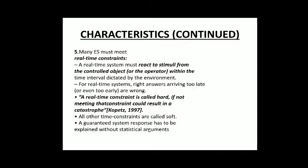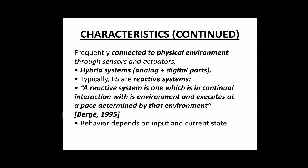For a real-time system, a right answer arriving too late or too early is considered wrong. A real-time constraint is called hard if not meeting that constraint could result in a catastrophe. All other time constraints are called soft. A guaranteed system response must be established without statistical arguments. Embedded systems are frequently connected to the physical environment through sensors and actuators, so they know what is happening around them and can respond accordingly.